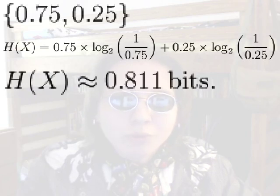And the result is about 0.811 bits. So for every time we flip the strange coin, we'll get an average of 0.811 bits of information.